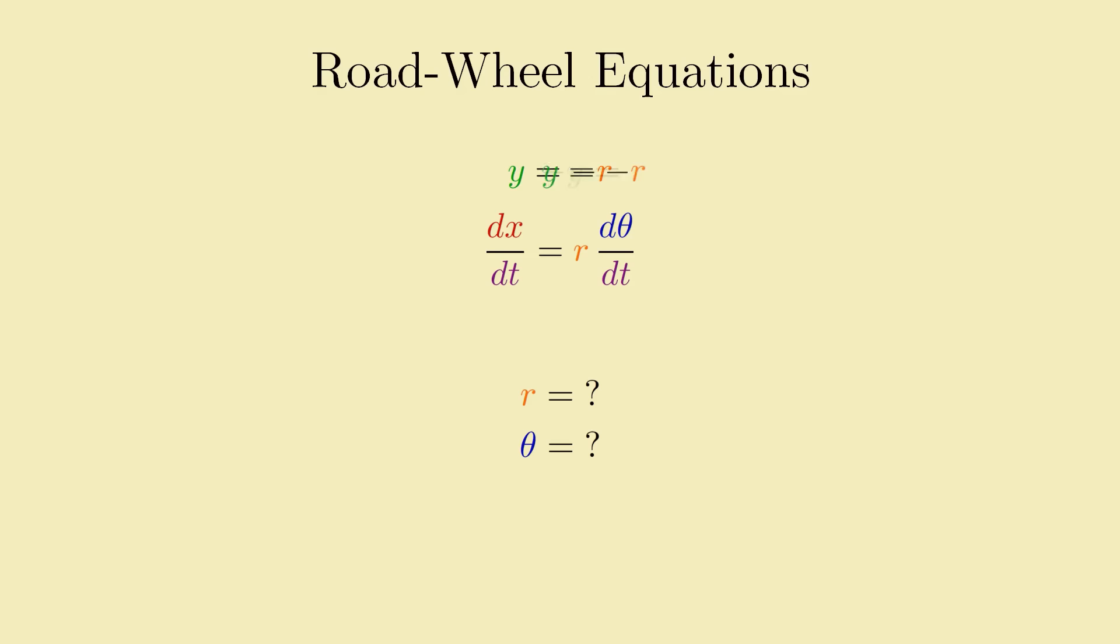It's basically just a matter of rearranging the original road wheel equations so they're solved for r and theta instead of x and y. Solving for r is easy. Just negate both sides of the first road wheel equation and we get negative y equals r, or flipping it around, r equals negative y. As for theta, if we divide both sides of the second road wheel equation by r, we get that the derivative of theta is 1 over r times the derivative of x. But we can use our newly rearranged first equation to swap out r for negative y, and so we get the derivative of theta is equal to negative 1 over y times the derivative of x.